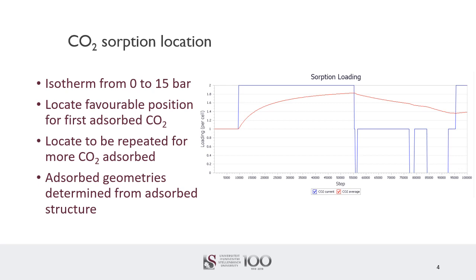The adsorbed structure with a single carbon dioxide molecule was optimized again. Since the sorption module only considers a rigid framework, this was an attempt to describe the framework flexibility due to gas pressure. The sorption isotherm and location calculations can then be repeated on this new optimized adsorbed geometry for multiple absorption cycles, optimizing the unit cell after each newly added carbon dioxide molecule.